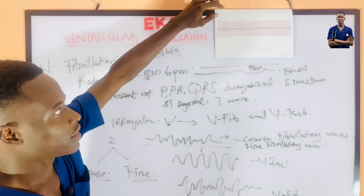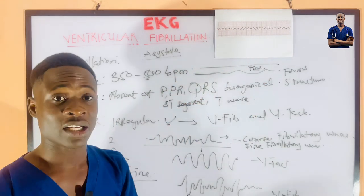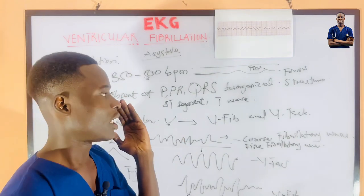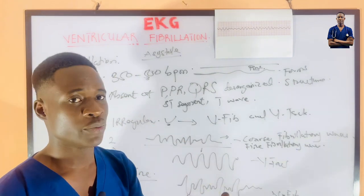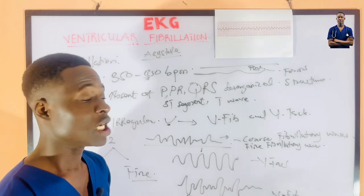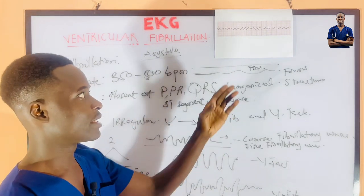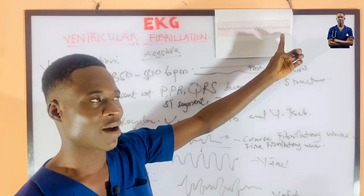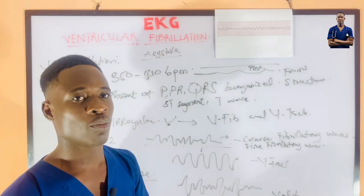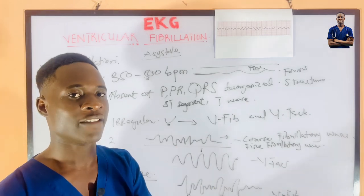Looking at the EKG graph, you can see chaotic and disorganized QRS complexes. You cannot find a P wave, PR interval, ST segment, or T wave — none of these are present. The QRS complexes are disorganized. The coarse fibrillatory wave generated by ventricular fibrillation can be treated or reversed to normal with a higher probability compared to the fine fibrillatory wave.